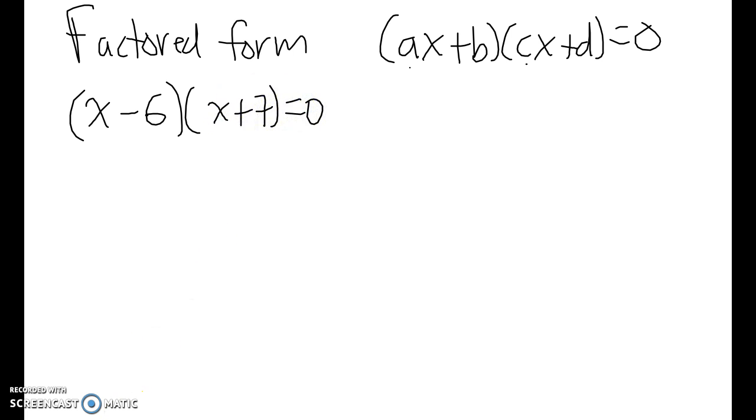Then it's just a straight application of the null factor law or the zero product property. So I know that X minus six is zero or X plus seven equals zero. Because if any one of those individual cases is true, then the product of these two things would also be zero. That's how I can get my two answers quite quickly when it's given in this form.